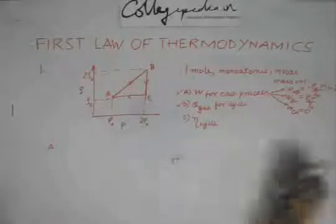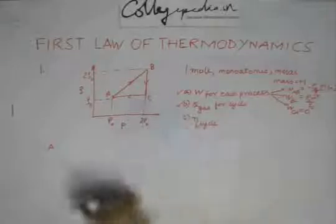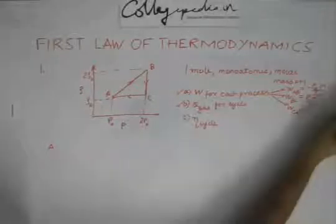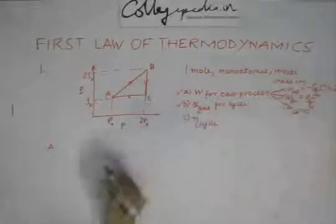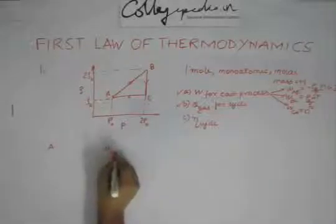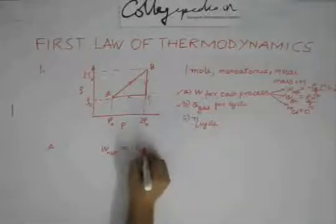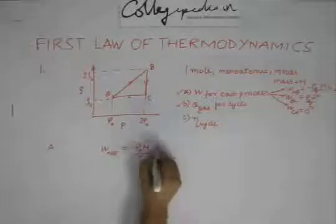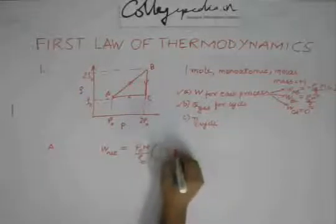To find out the efficiency of the cycle, we need to find out the network. Network is nothing but the summation of these three. So W net is going to be equal to P0V0 by R0 times (1 minus ln 2).